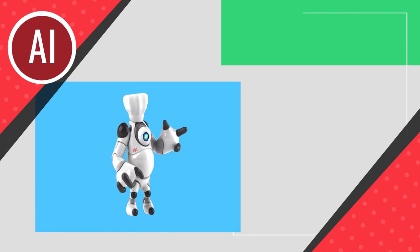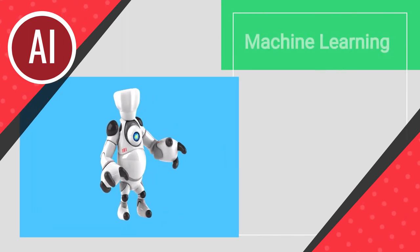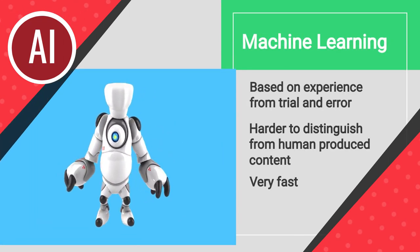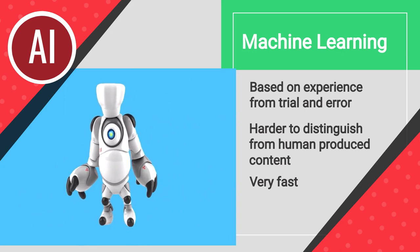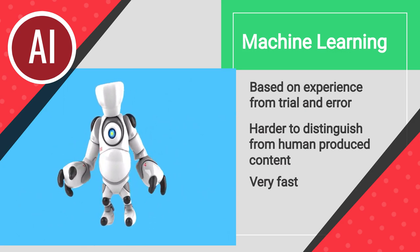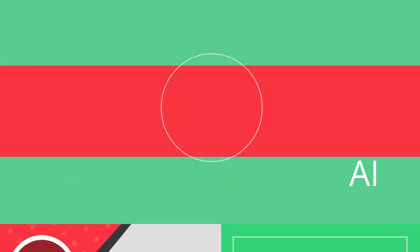This trial and error that is based on experience, known as machine learning, enables computers to become increasingly accurate and, in the process, craft material increasingly indistinguishable from what a human being might make, and much faster.